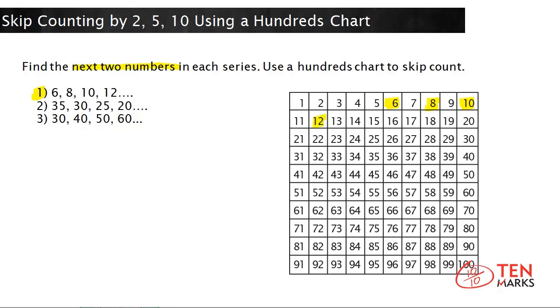If you notice that every other number is highlighted, this is a pattern of skip counting by 2. Every other number is also even. So you can find the next two even numbers or you can skip count by 2. I'm going to highlight the next two numbers in green.